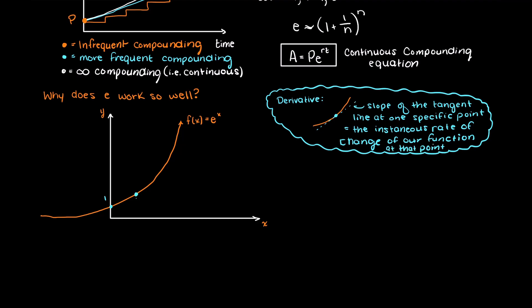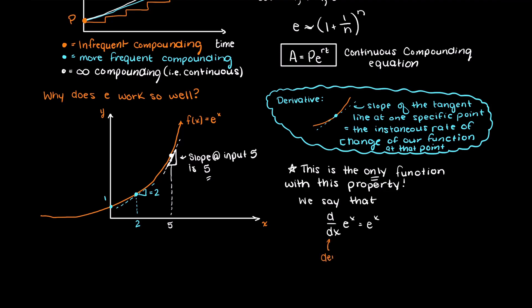The cool thing about our natural exponential function is that any derivative is just equal to the output value, so this means that the derivative of our natural exponential function is just itself. The really cool thing about this is that this is the only function that this is true for.